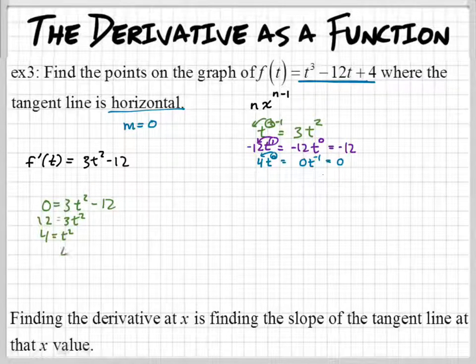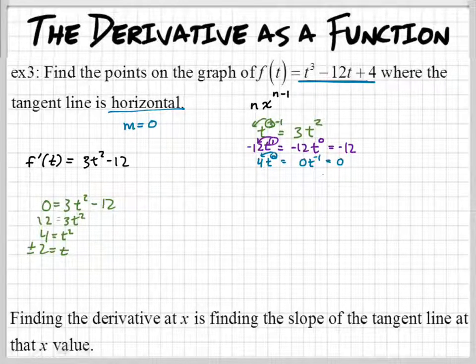And then we divide both sides by 3. And then we square root both sides. Plus or minus. So, we have two t's where the tangent line would be horizontal. And remember where I showed you guys where you would see a horizontal line? That's when the curve switches from going up and then starts going down. Or when it's going down and it starts going up.